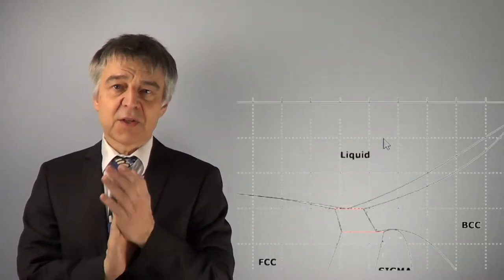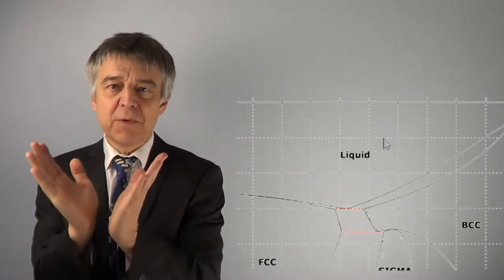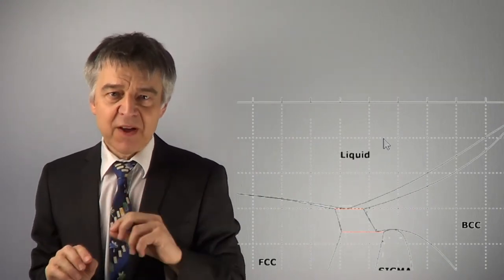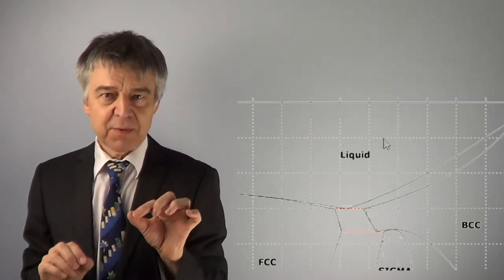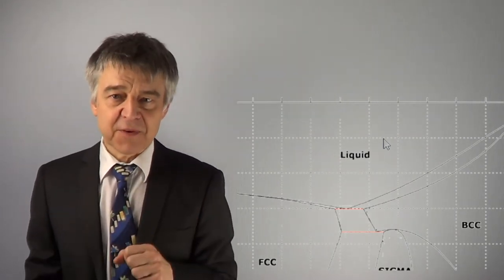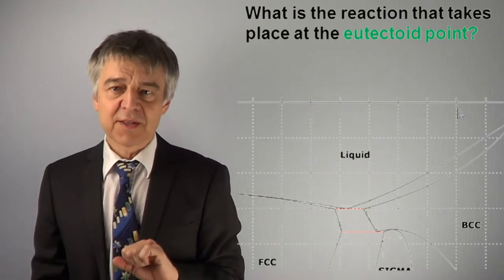What is the reaction that takes place at the eutectoid point? A eutectoid point, like eutectic, shows a V-shaped structure of a binodal curve. However, the binodal does not separate a homogeneous liquid phase, but a homogeneous solid phase which decomposes into two other solids.